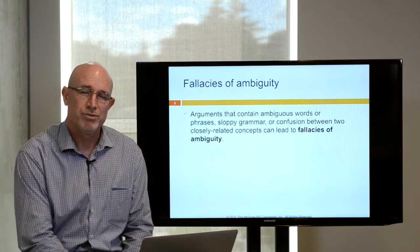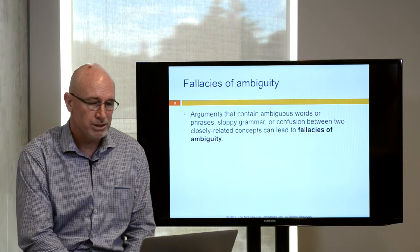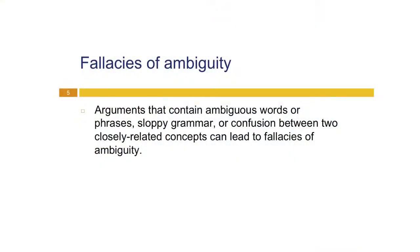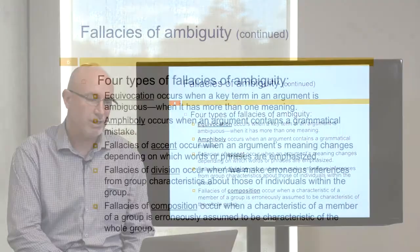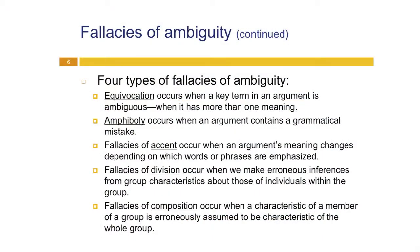There are a number of different types of informal fallacies. One is called a fallacy of ambiguity — an argument that contains ambiguous words or phrases, sloppy grammar, or confusion between closely related concepts. There are four types: equivocation, which occurs when a key term in an argument is ambiguous; amphiboly, which occurs when an argument contains a grammatical mistake; fallacies of accent, which occur when an argument's meaning changes depending on which words or phrases are emphasized; fallacies of division, which occur when we make erroneous inferences from group characteristics about individuals within the group; and fallacies of composition, when a characteristic of a member of a group is erroneously assumed to be a characteristic of the whole group.